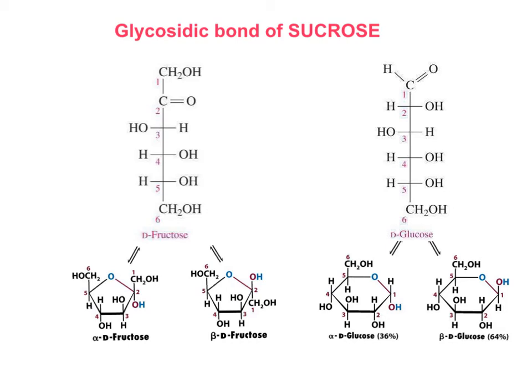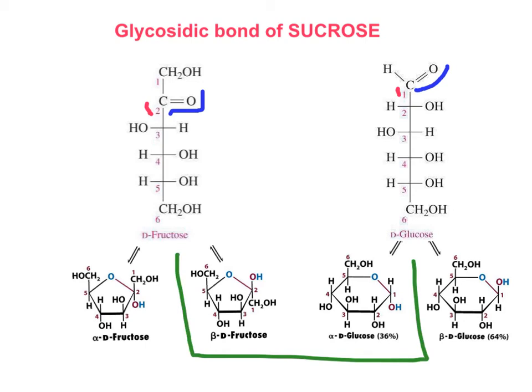Now we will discuss the formation of the glycosidic bond in sucrose, or table sugar. This involves the monosaccharides fructose and glucose. This disaccharide is not a reducing sugar because the glycosidic bond involves both anomeric carbons. When we look at the structures, we have a ketose and an aldose.